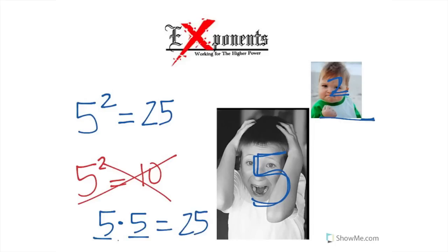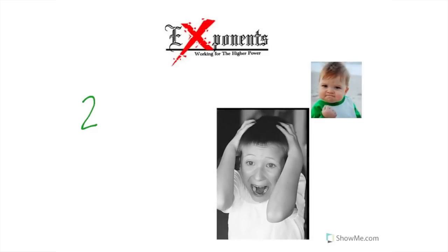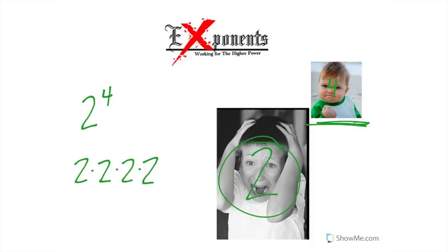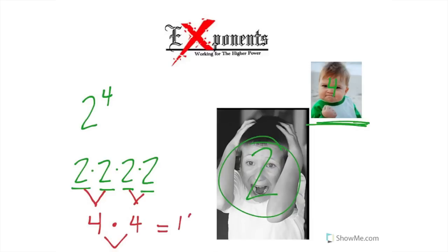Let's try two to the fourth power. A typical wrong response: "two times four — the answer is eight." Wrong. Always show your work. Using the bully and the brother: the little guy tells his big brother "I want to see you split four times," so we get two times two times two times two. Connecting them in pairs: two times two is four, two times two is four, and four times four gives me sixteen. The correct answer to two to the fourth power equals sixteen.